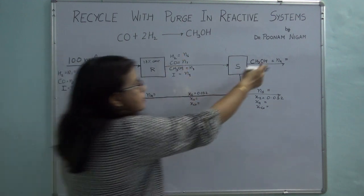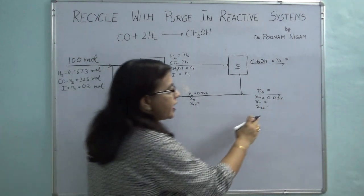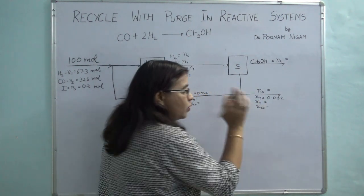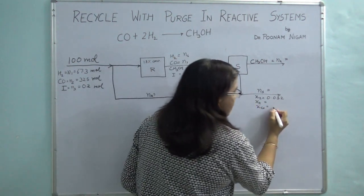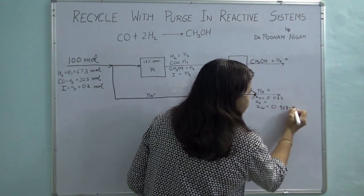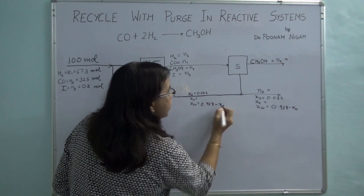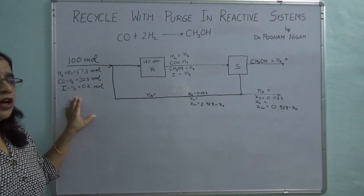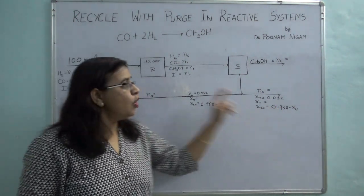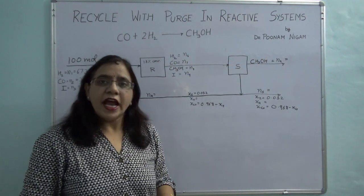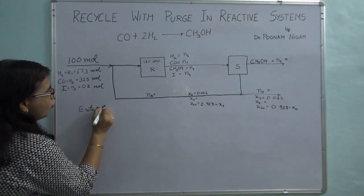Keep in mind that the sum of all mole fractions equals 1. So if I calculate x_H (mole fraction of hydrogen), I know the mole fraction of carbon monoxide: it will be 1 − 0.032 − x_H = 0.968 − x_H. When selecting the fresh feed as basis, always first take a balance on the overall system. We will use the extent of reaction method to solve this problem.